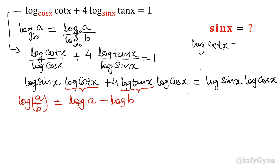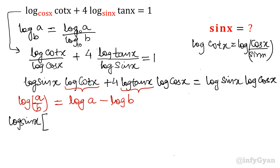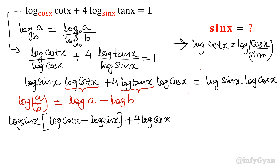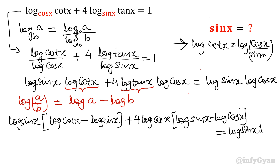log(cot x) will be log(cos x / sin x). By the quotient property of logarithm, it becomes log(cos x) minus log(sin x). So the left side becomes: log(sin x) times [log(cos x) minus log(sin x)] plus 4 times log(cos x) times [log(sin x) minus log(cos x)], equal to log(sin x)·log(cos x) on the right side.